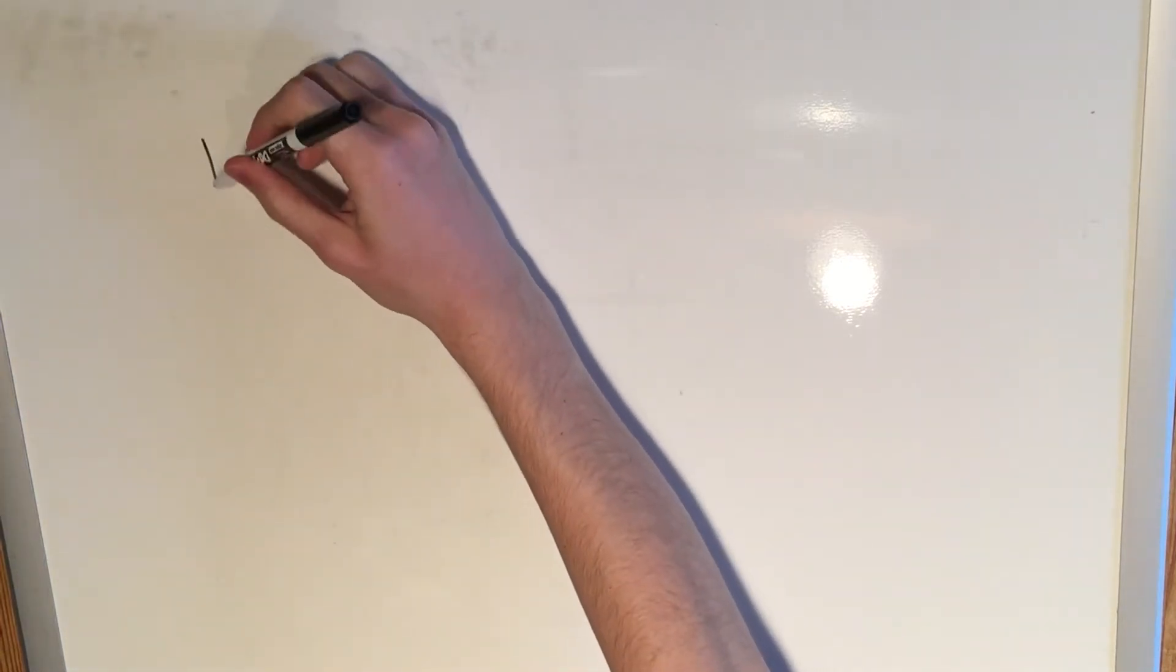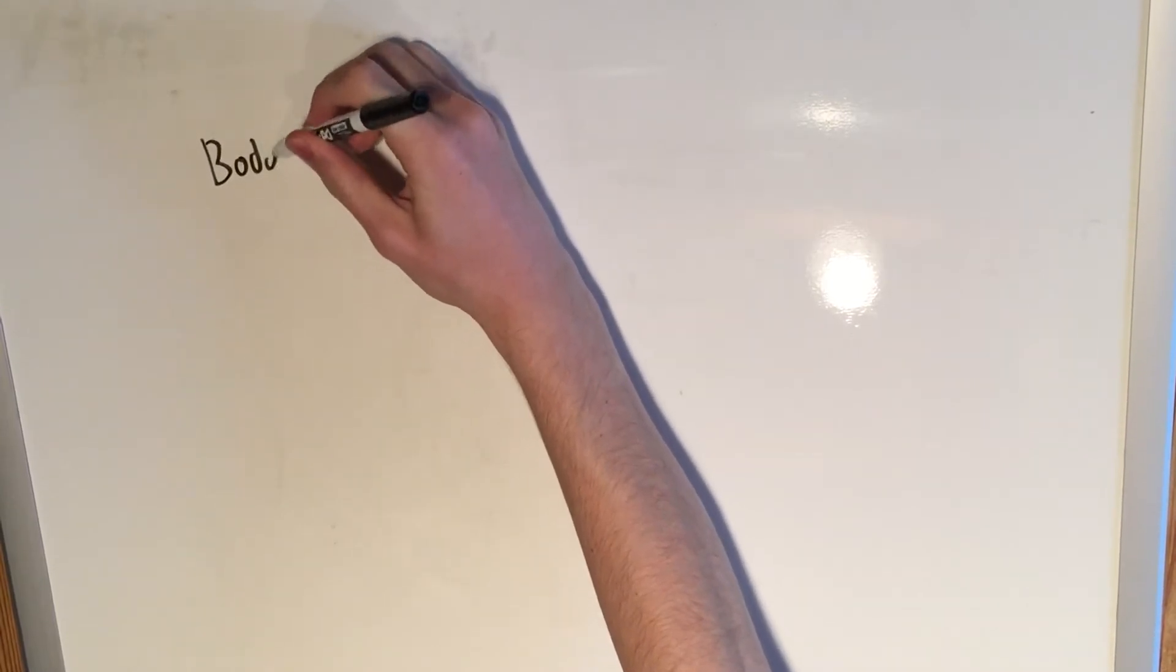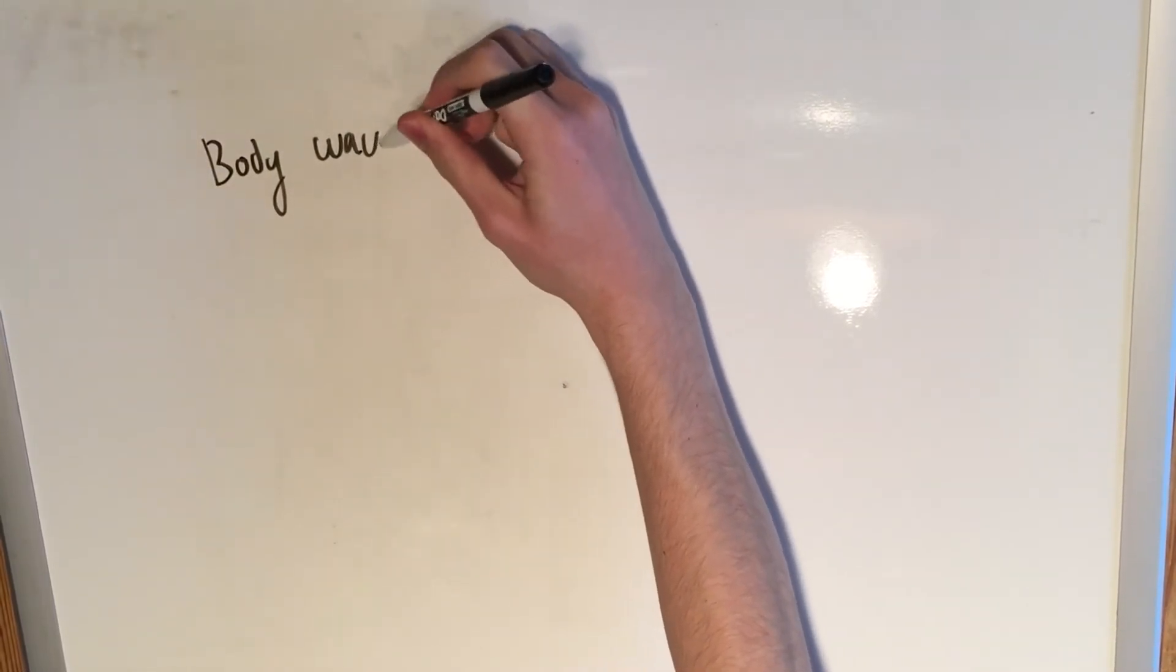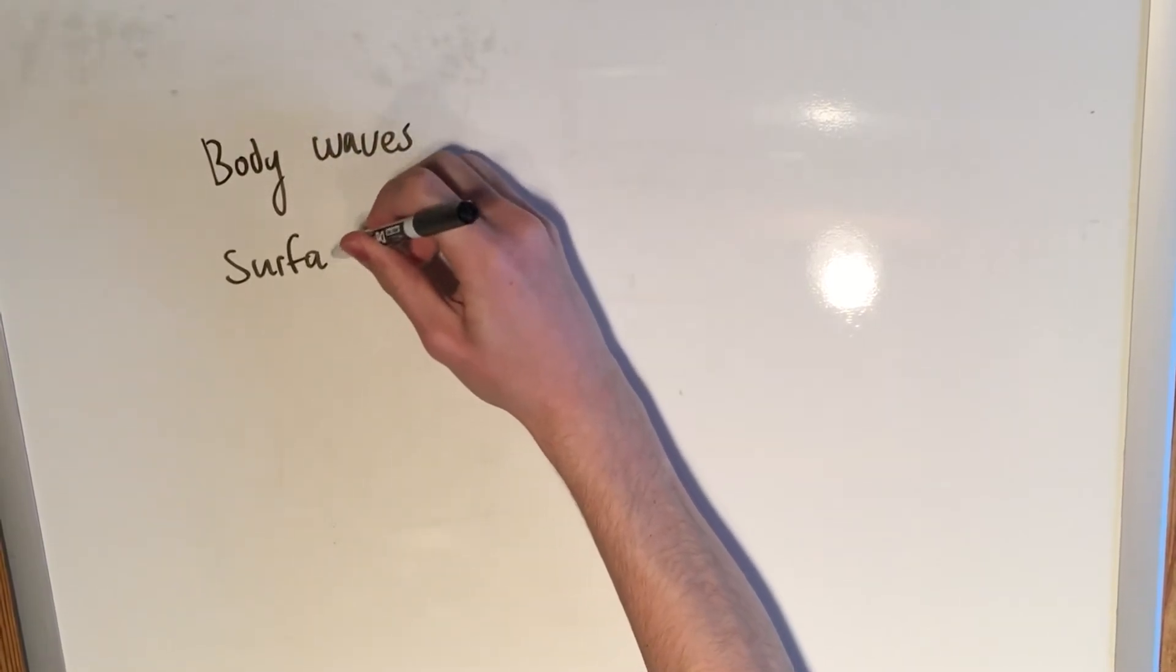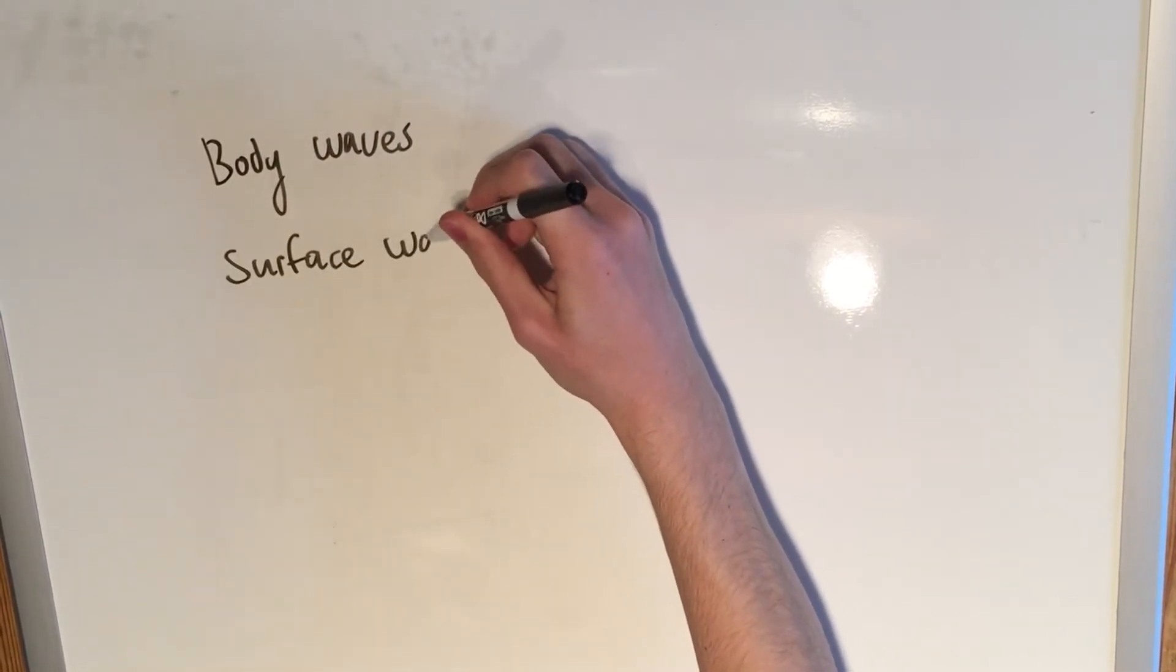When an earthquake occurs, there are two types of waves that it generates. These are body waves and surface waves. Now this video is going to be focusing on body waves, specifically the two types that we can observe.